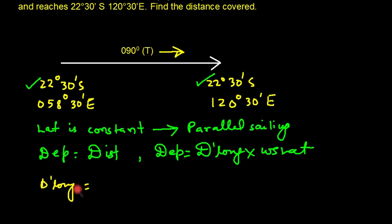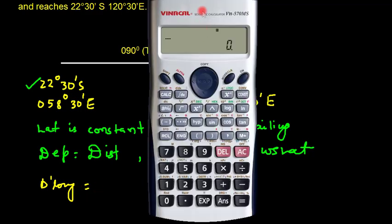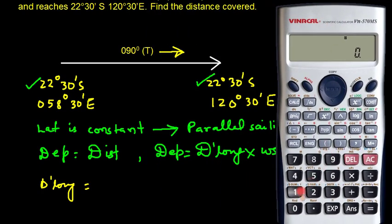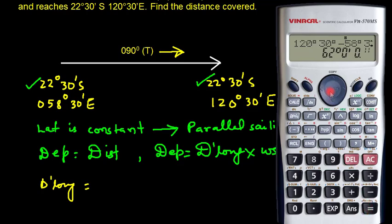Using the calculator: 120°30' minus 58°30' gives 62°. Converting to minutes: 62 × 60 = 3720 minutes. So D.Long = 3720 minutes.